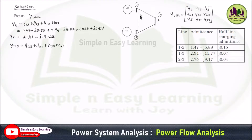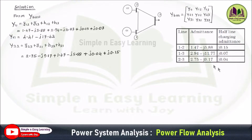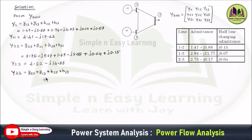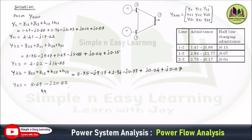For Y22, the lines connected to bus 2 are lines 2-1 and 2-3. Y21 equals Y12 = 1.47 − j5.88, and Y23 = 2.75 − j9.17, plus half-line charging admittances j0.15 and j0.04, giving Y22 = 4.22 − j14.86. Similarly for bus 3, adding Y23, Y13, and the half-line charging admittances gives Y33 = 5.69 − j20.83.